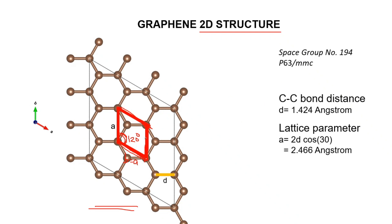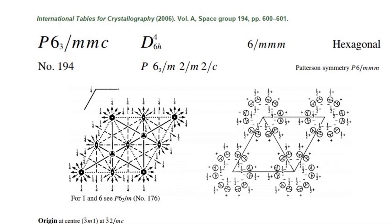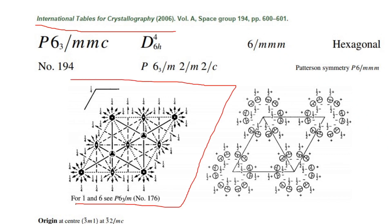From the shape we can see that graphene belongs to space group 194. From the International Tables for Crystallography we can find all the symmetry values of this structure. We will talk about this in a different tutorial. Thank you everyone for watching, see you soon.